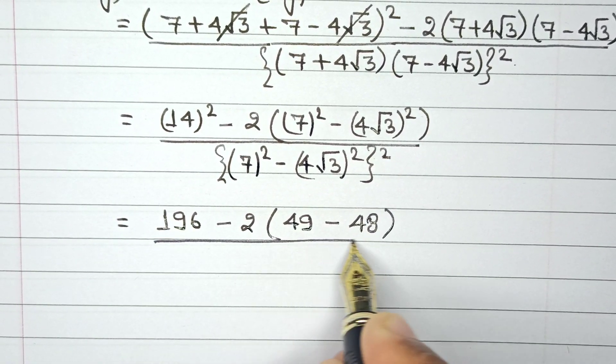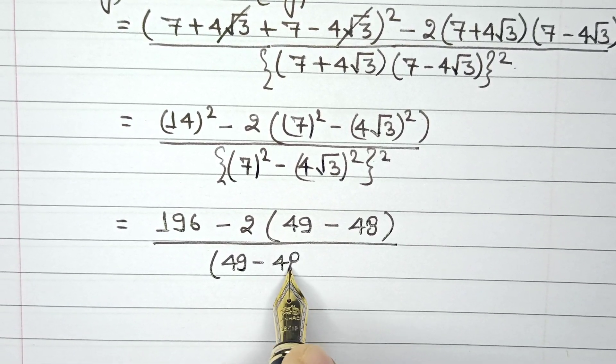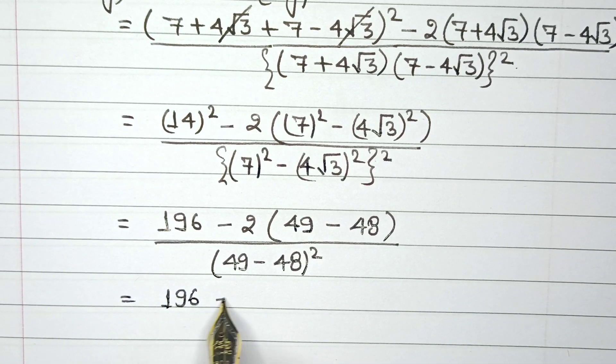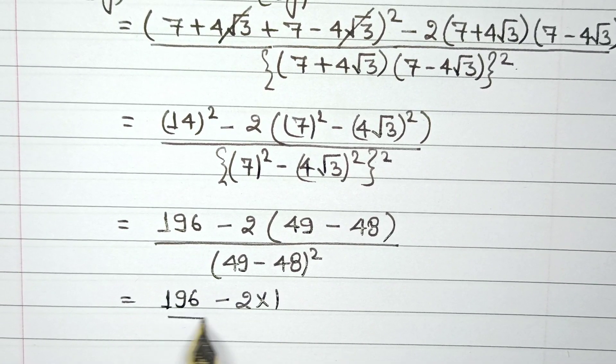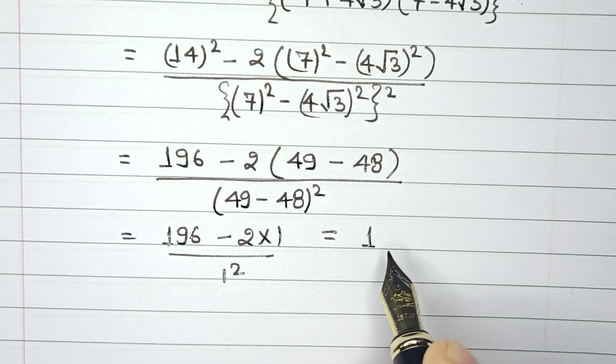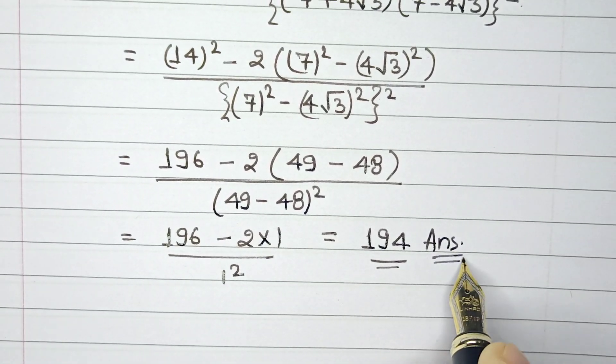This is then divided by 49 minus 48 whole square. So this is equal to 196 minus 2 multiplied by 1 divided by 1 square. So the final answer to this particular problem, my friend, is 194. This is the final answer that we were looking for.